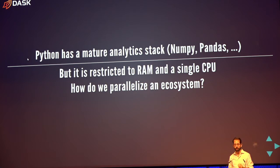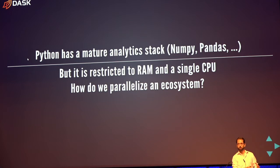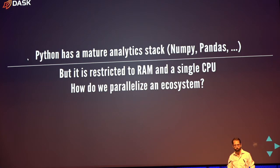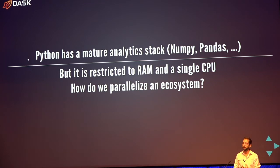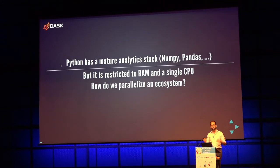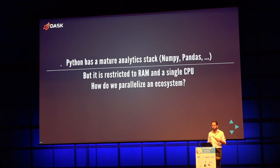Python has a very mature analytic stack with libraries like NumPy and pandas — both very fast, usually written in C, Fortran, or Cython — and also scikit-learn, scikit-image, and others. However, these libraries have a flaw: they're mostly restricted to data that fits in memory and designed to run on a single core of a CPU. As datasets get larger and computers get more parallel, this becomes a significant challenge.